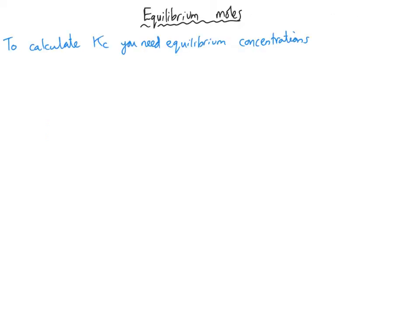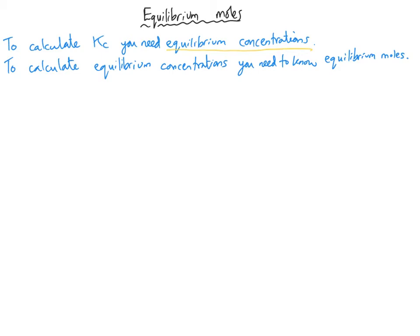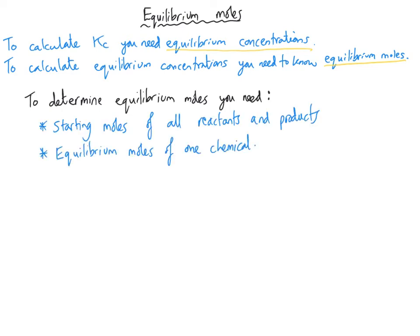To calculate a value for Kc, you need the equilibrium concentrations of each reactant and product. To find those, you will often first need to calculate the equilibrium moles of all the reactants and products. To do this you need two things: the moles of all chemicals at the start, and the moles of one chemical at equilibrium. From those two bits of information, you can work out the moles of all other chemicals at equilibrium.